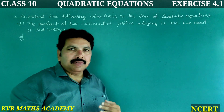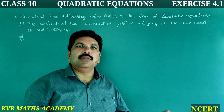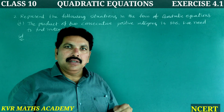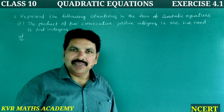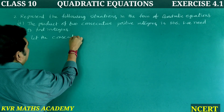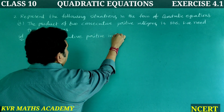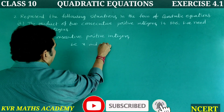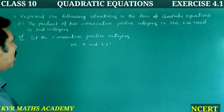Consecutive integers are numbers that follow each other, like 1, 2; 3, 4; 10, 11. So let the two consecutive positive integers be X and X + 1. According to the problem, the product of these two numbers is equal to 306.